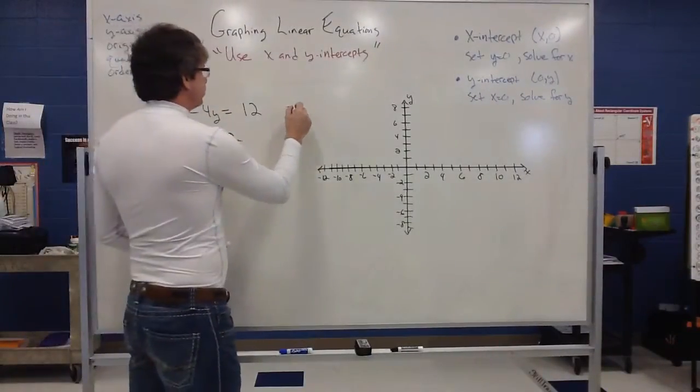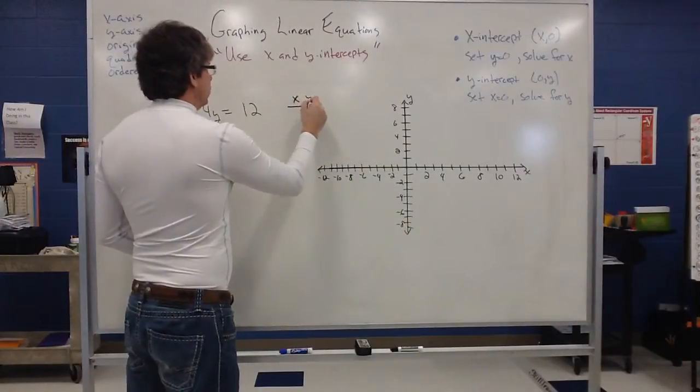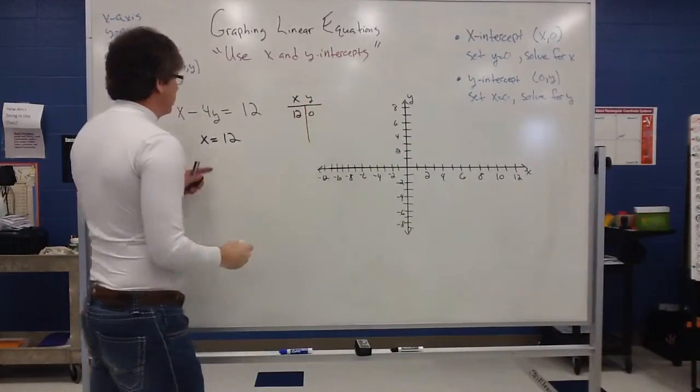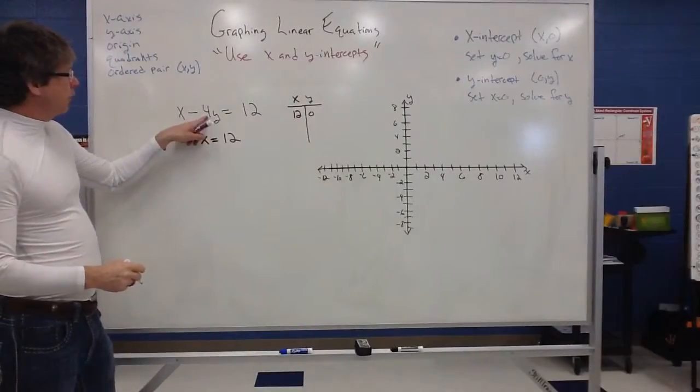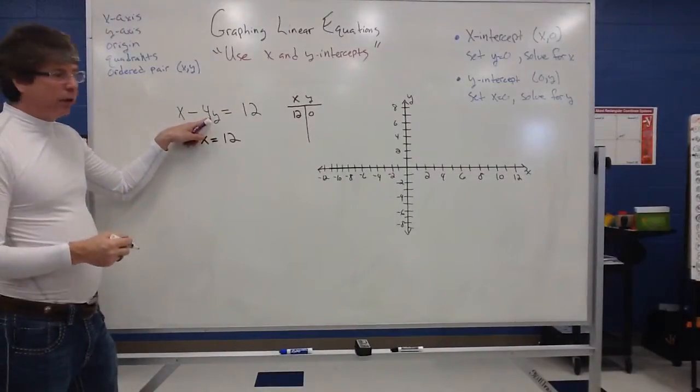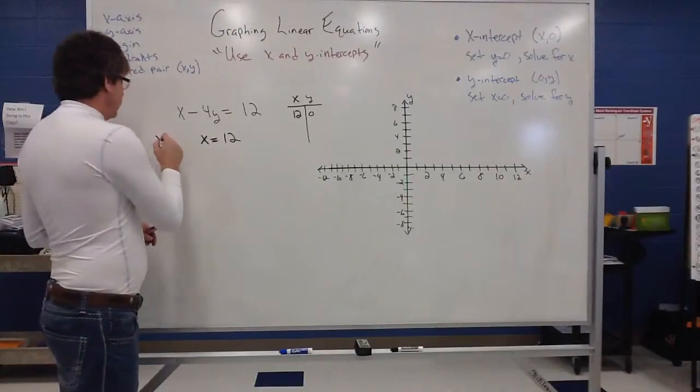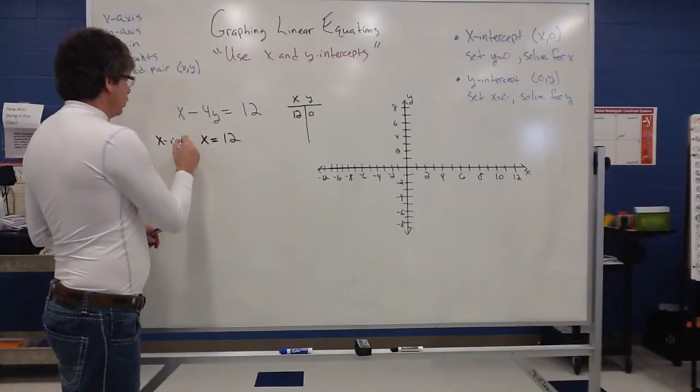So in my table, we end up with 12, 0. Because remember, when you put 0 for y, 4 times 0 is 0. So that term just falls out of the problem. So all you have is x equals 12. So the x intercept will be 12.